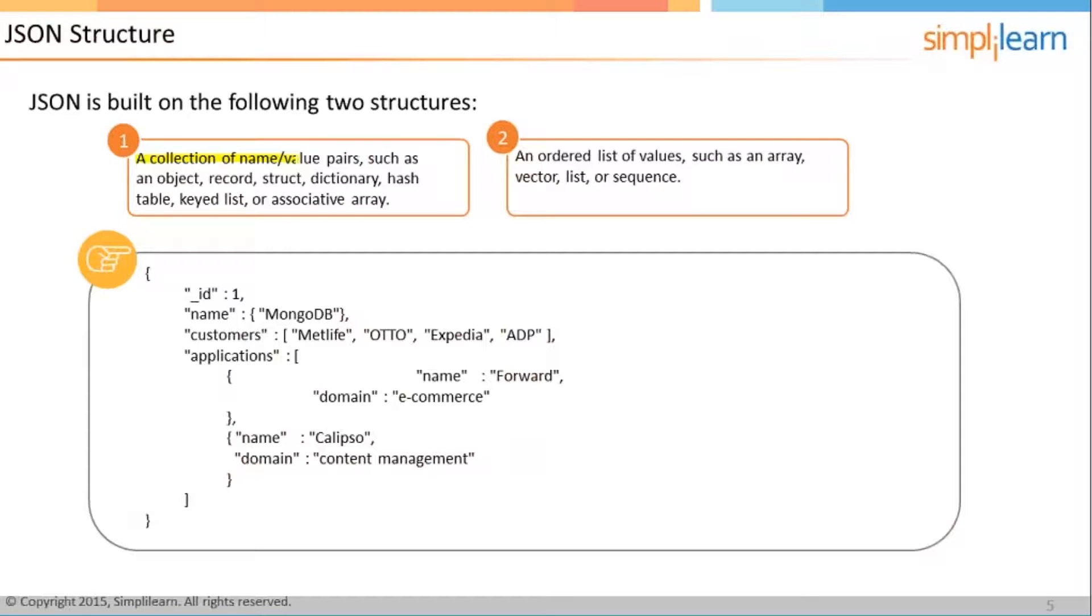A collection of name-value pairs such as an object, record, struct, dictionary, hash table, keyed list or associative arrays. So that's all the different kinds of things a document can contain and that too in a collection.